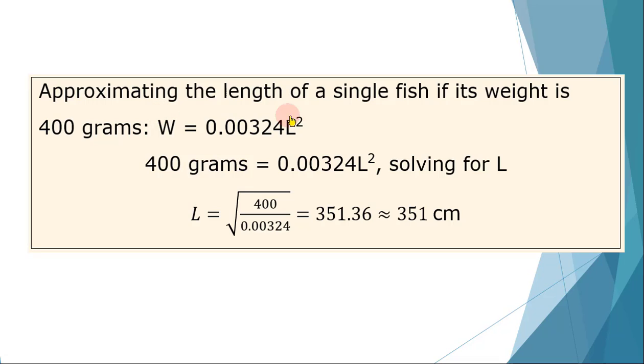Now, approximating the length of a single fish if its weight is 400 grams, then we go back to the original given function W = 0.00324L². Then we have to equate our given with the weight, 400 grams, and that is equal to 0.00324L². Then solving for L, we found that L is 351 centimeters, corresponding to the 400 grams given weight of tilapia.